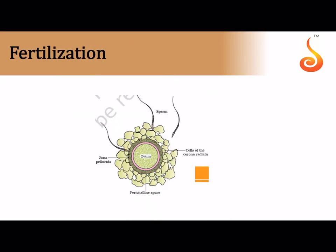During fertilization, the ovum (actually the secondary oocyte) is surrounded by several sperm. The secondary oocyte that came out of the Graafian follicle is surrounded by cells of the granulosa called the corona radiata. Additionally, the secondary oocyte is covered by a membrane called the zona pellucida, with an inner plasma membrane. The pink-colored gap between the zona pellucida and the plasma membrane is called the perivitelline space.